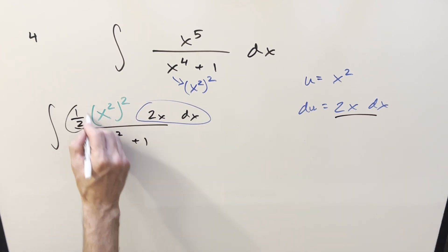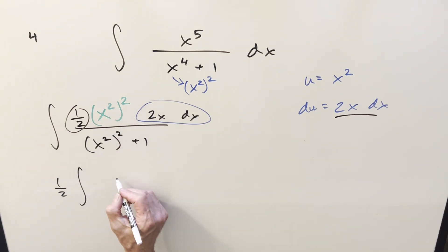So now we'll substitute, take the half out front as a constant. We have 1 half integral. This thing's u, so it becomes u squared over u squared plus 1 du. And that almost settles it.